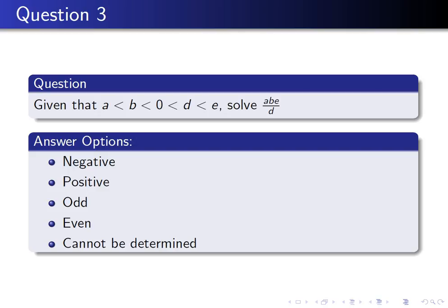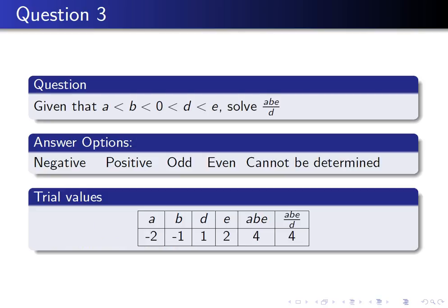Let's jump straight into some trial values. There's no need to pick complicated numbers. Choose the simplest numbers that meet your conditions. So here I'm trying A is minus 2, B is minus 1, D is 1, E is 2. So A times B makes 2, times it by E makes 4, and divided by D makes 4 again. Straight away I can rule out half of the possible answers because this number is not negative and it's not odd.